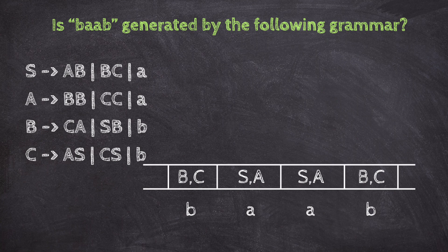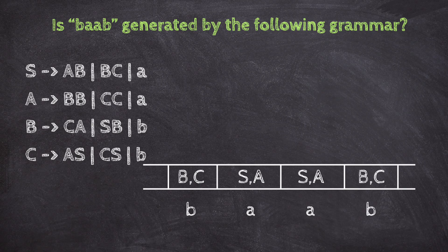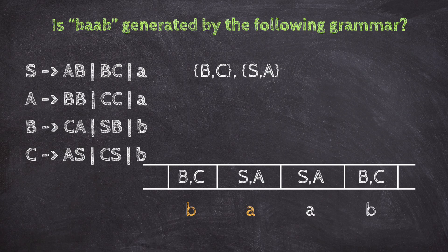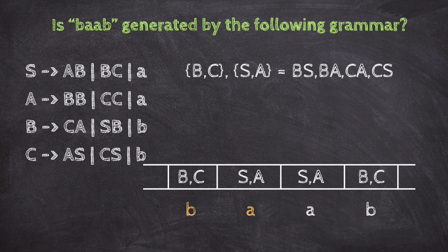Now, let's move to the second row, where we combine pairs of adjacent cells. For BA, we look at B, C from B, and S, A from A. All pairwise combinations are BS, BA, CS, CA. Now, we check the grammar to see if any non-terminals generate these pairs. For BS, nothing. For BA, nothing. For CS, C goes to CS, so we write C. For CA, B goes to CA, so we write B. So, above BA, we write B and C.